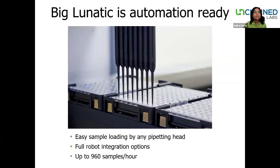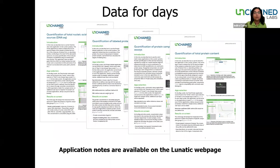In addition to the capabilities we've discussed so far, Big Lunatic also meets the needs of labs working at larger scales. For these high-throughput needs, the plates used for Big Lunatic are compatible with liquid handling robots. We have a number of comprehensive and informative application notes on the Lunatic webpage, so please do check these out to learn more about what can be done on the Lunatic.